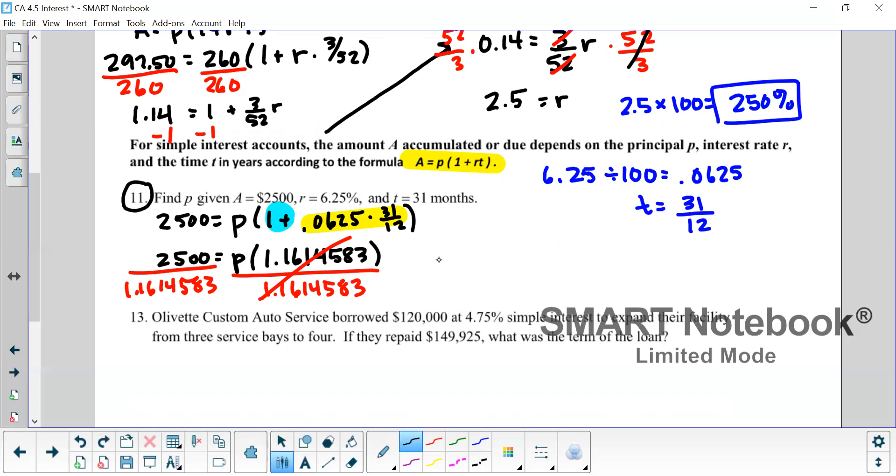And then here's what you would have in the next step. 2500 equals P times 1.1614583. And now you just divide both sides by that number to get P by itself. So P is approximately 2,152. And remember, P stands for your beginning amount in dollars. So we need a dollar sign.